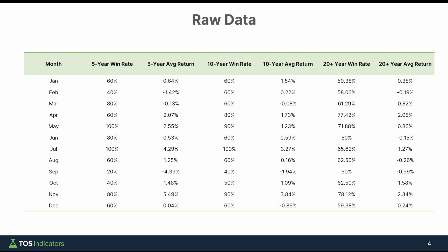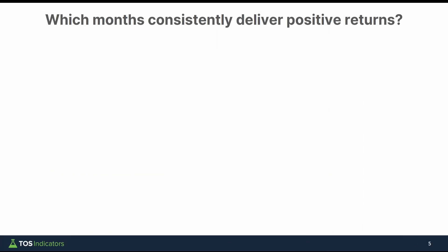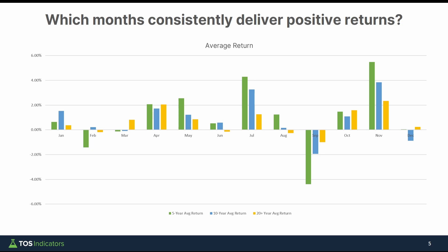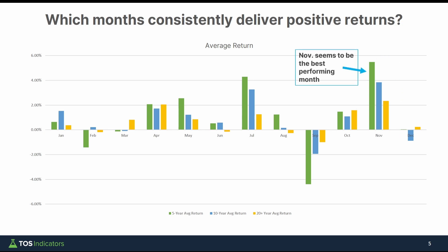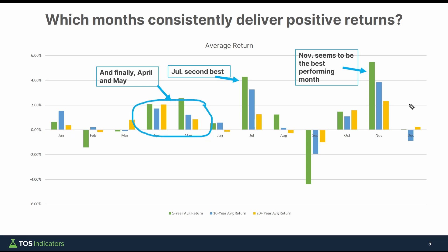Let me show you how I've broken out the data to make this more visual and answer the questions we posed. The first question was, which months consistently deliver positive returns? Here's a chart of all the average returns, with all three data segments — the 5-year, the 10-year, and the 30-year-plus — plotted. Looking visually, it should be easy to tell the month with the most consistent positive results. It's November, which seems to be the best performing month. Second best is July, and after July we have April and May, which tend to look like a tie. So we have three periods in which returns tend to be more positive compared to other months.